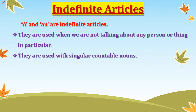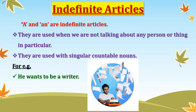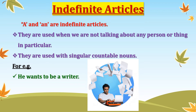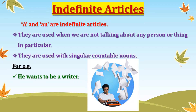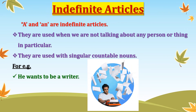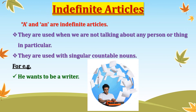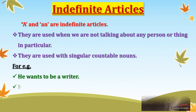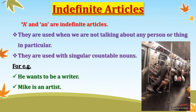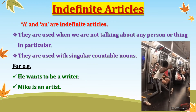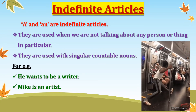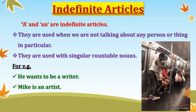Let us take a few examples. He wants to be a writer. Here, this word 'writer' is singular and we can count it, so we have used the article 'a' here. Mike is an artist. Again, this noun 'artist' is singular and is countable. That is why we have used 'an' here.